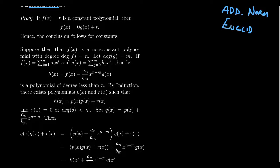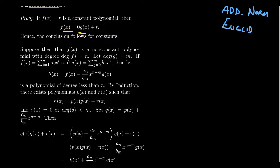First, suppose that F is a constant polynomial — just a number belonging to the coefficient field. Then you could write F(X) as zero times G(X) plus R, where R is a constant polynomial. If F and G are both constants, they're both units, so divisibility is a trivial statement. And if F is constant and G is not, its degree would be larger, so we get exactly this situation. The division algorithm is satisfied in a trivial manner.